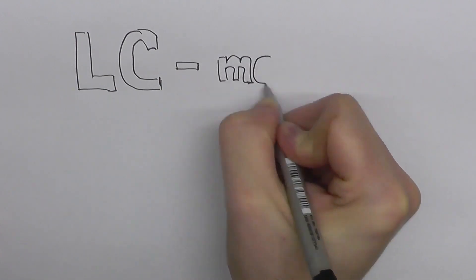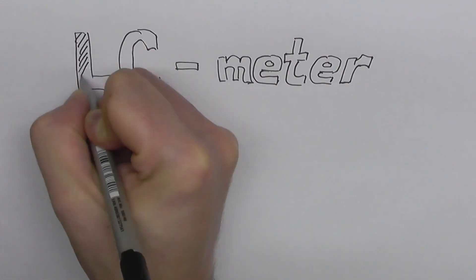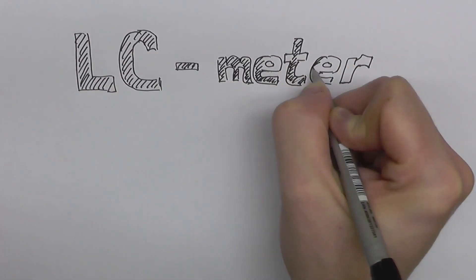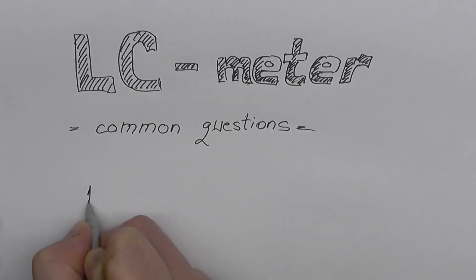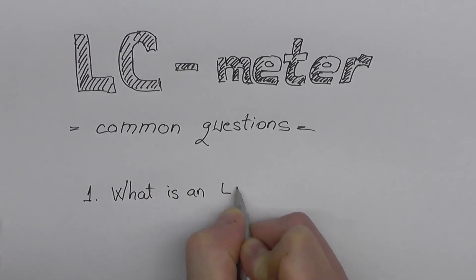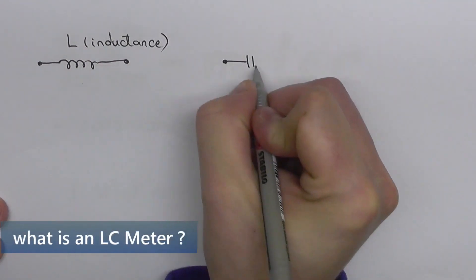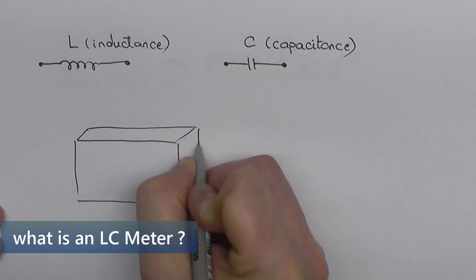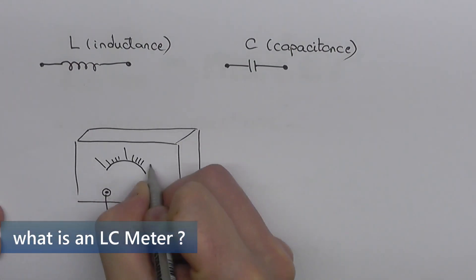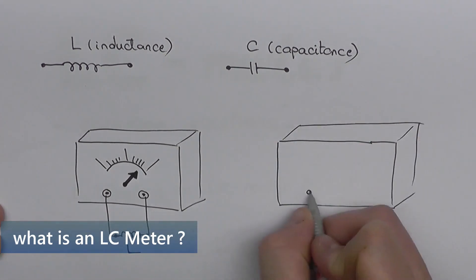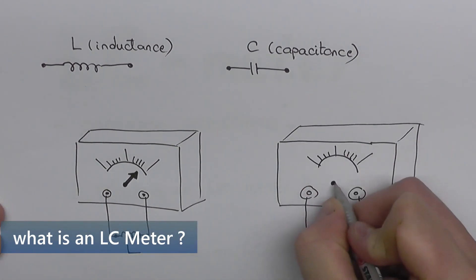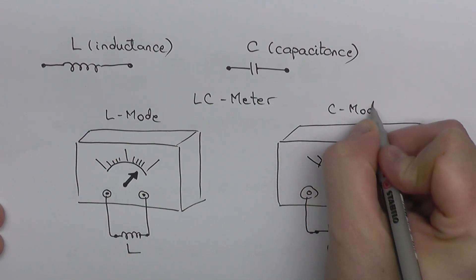All right, so before we dive into the workflow of the designing process, let me go ahead and clear some of the basic questions for the beginners. First, what is an LC meter? What does it do? And second, what are the most common situations we're going to use it? In electronics, we use the letter L for inductances and the letter C for capacitances. Basically, an LC meter is a device that measures both inductances or capacitances, depending which mode you're in.